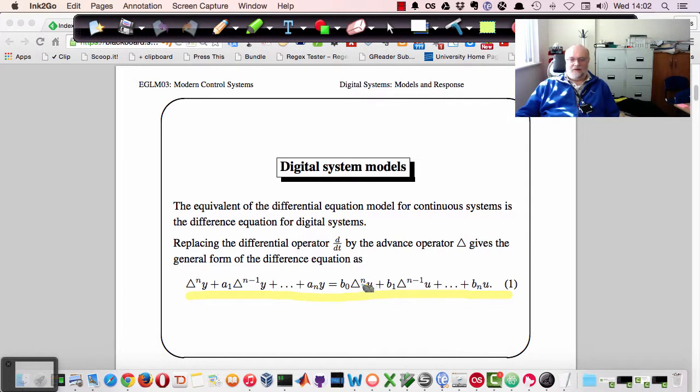So descending powers of the advanced operator applied to what we assume is a system output equal to the set of coefficients multiplying the equivalent for the input. So the system, as is normal for continuous systems, the input is u and the output is y.